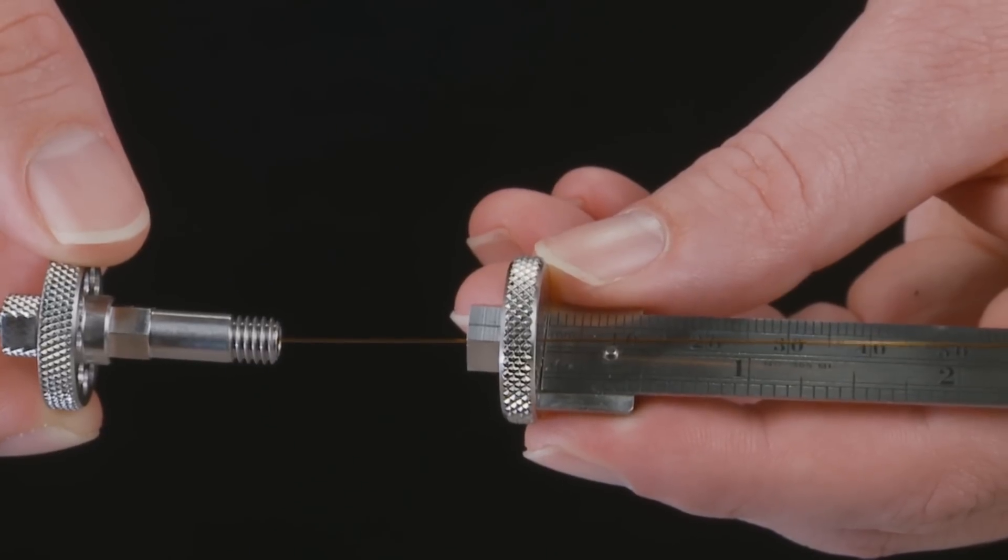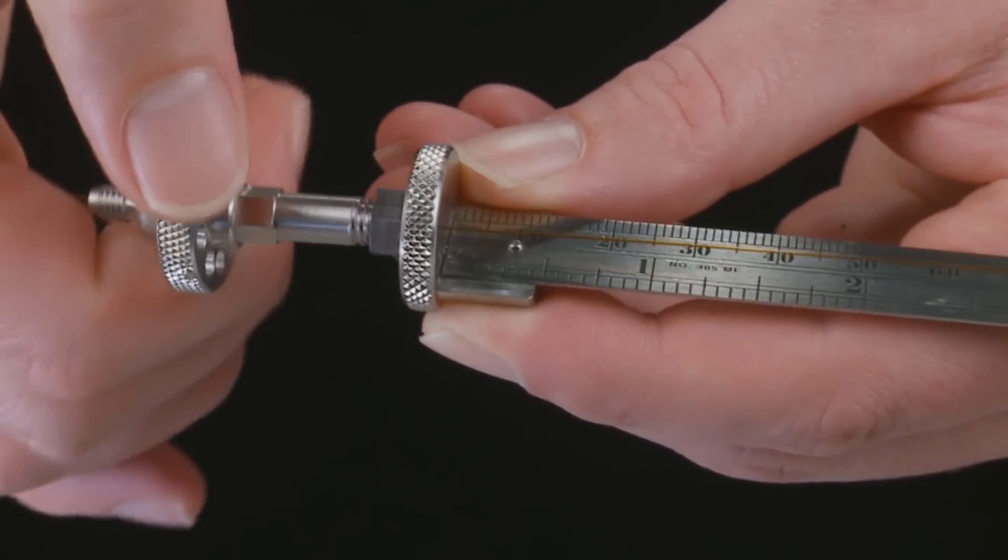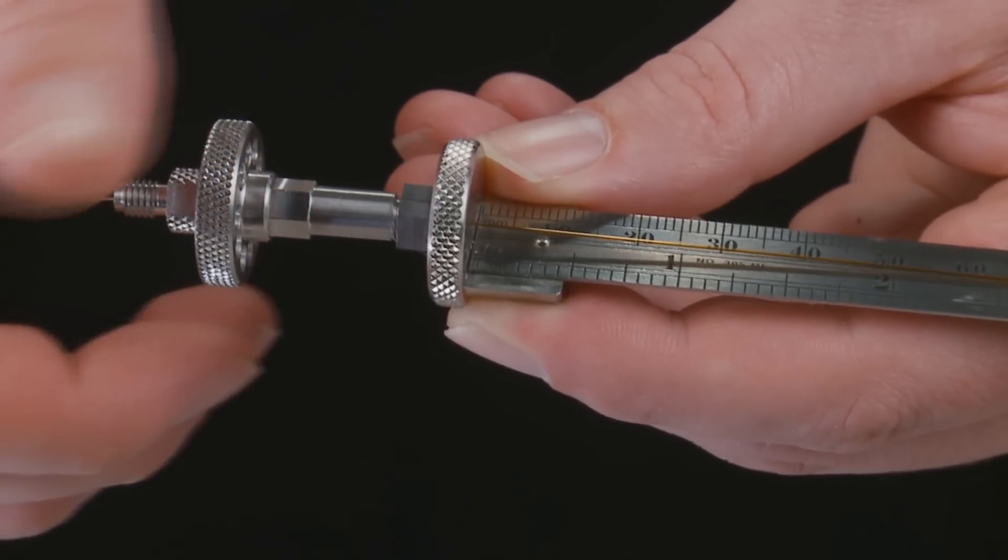Insert the end of the column and the cool lock nut into the bottom of the cool lock installation gauge. Hand tighten the cool lock nut into the gauge until the upper ferrule begins to compress.